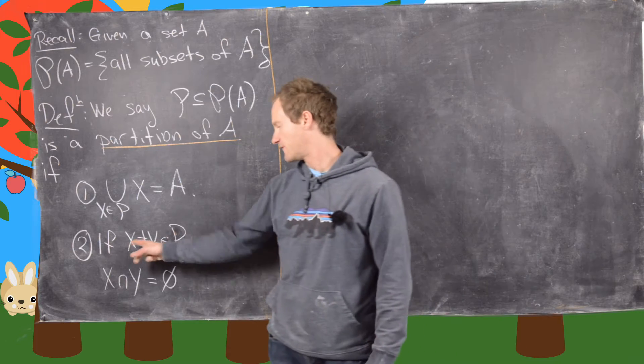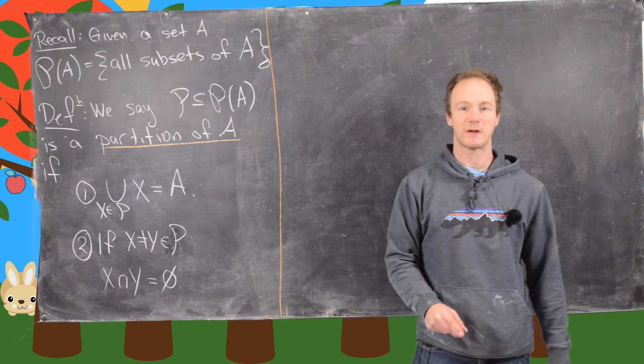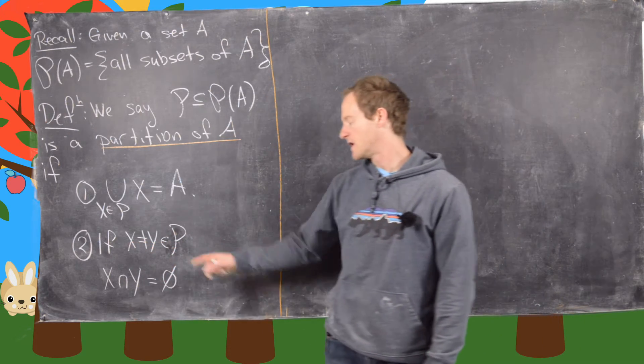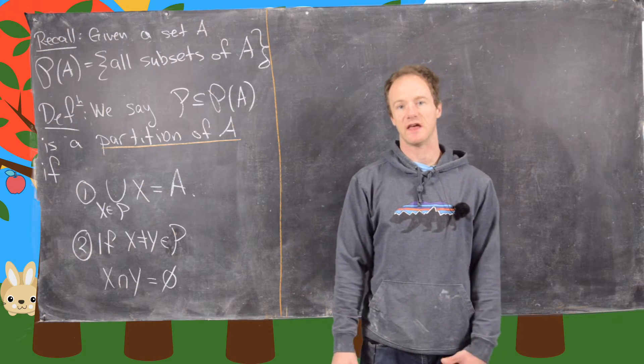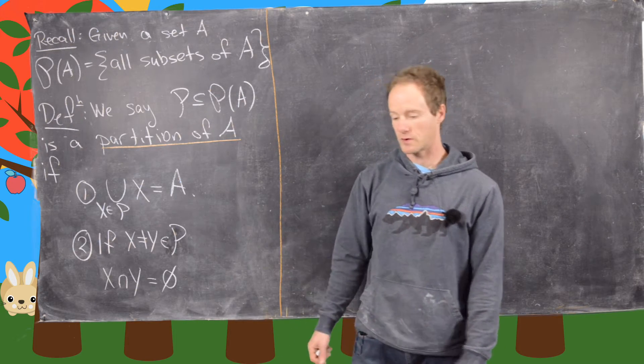And then if X and Y are in P but they're not equal, then they intersect to the empty set. So this is important too.